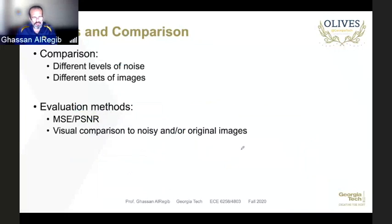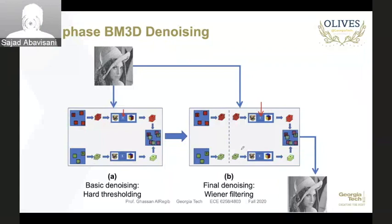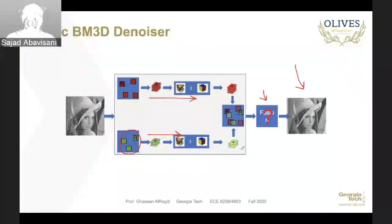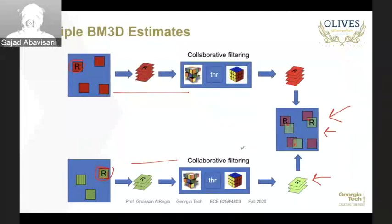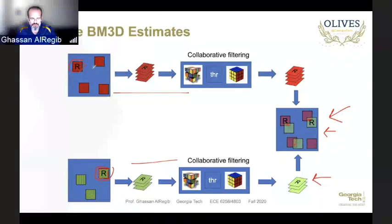Student question: when doing block matching we are using a deterministic criterion — if we iterate, aren't we going to get the same results or is there some randomness? Answer: the blocks you are dealing with will be slightly different after each denoising iteration, so there will be some randomness providing more coverage of the feature space, allowing better denoising. After a couple of iterations it converges.